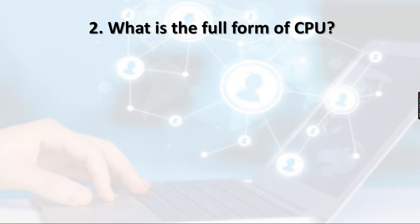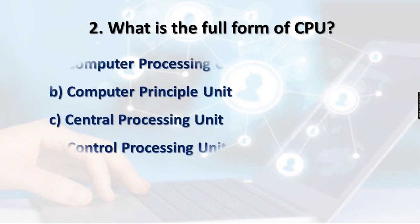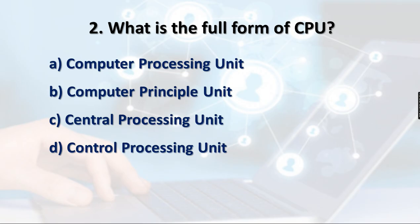Question 2: What is the full form of CPU? Option A: Computer Processing Unit, Option B: Computer Principal Unit, Option C: Central Processing Unit, Option D: Control Processing Unit.